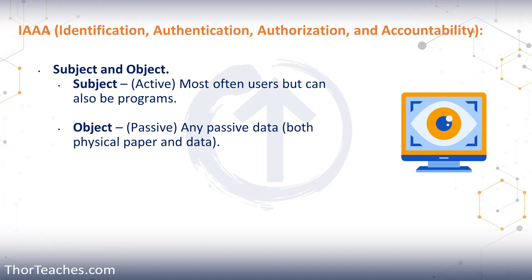Finally, let's talk about subjects and objects — a concept we'll return to throughout this course. A subject is active; it's most often users like you and me, but it can also be a program. Subjects manipulate objects. Objects have labels and subjects have clearance; for a subject to access an object, the clearance needs to supersede the label. Some things can be both subjects and objects, but not at the same time — for example, a program is the subject when it accesses data elsewhere, but becomes the object when something else pulls data from it. Objects are passive — any data, whether on paper or a server — and they are manipulated by subjects.